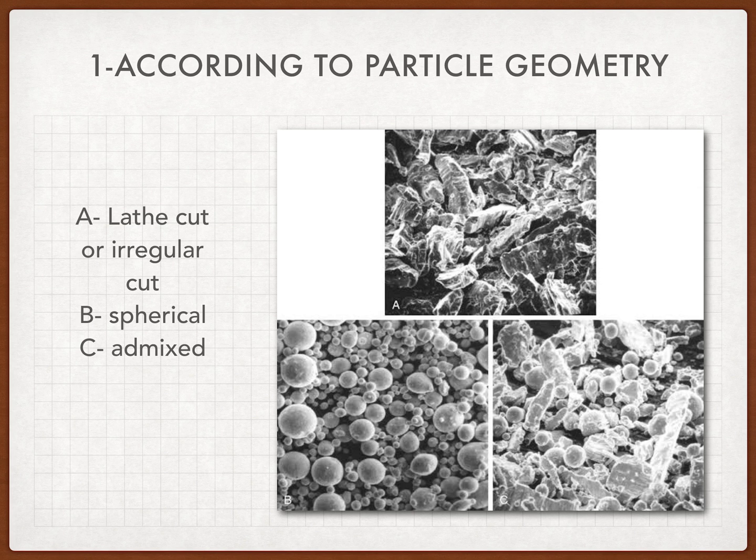The best type of amalgams are those that use both geometries — the irregular and the spherical — which is the admixed alloy. The combination of irregular and spherical shapes is the best, as it also requires more force to condense than the spherical particles but has less micro leakage.